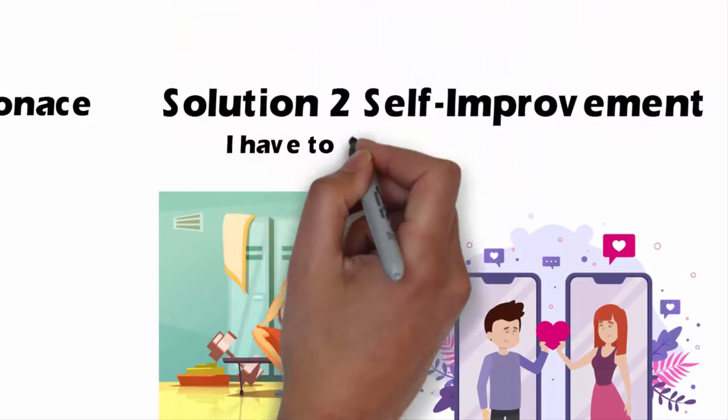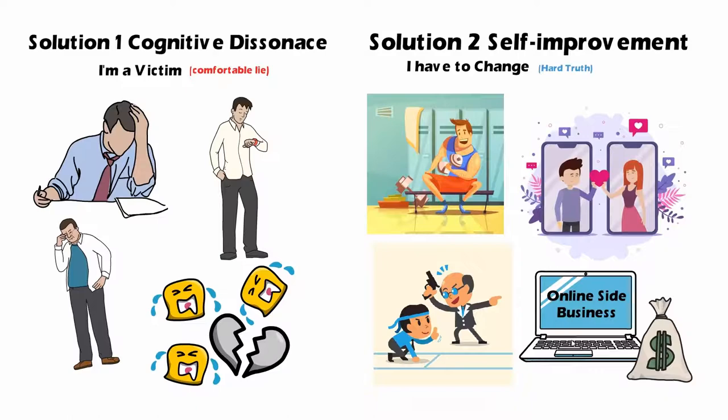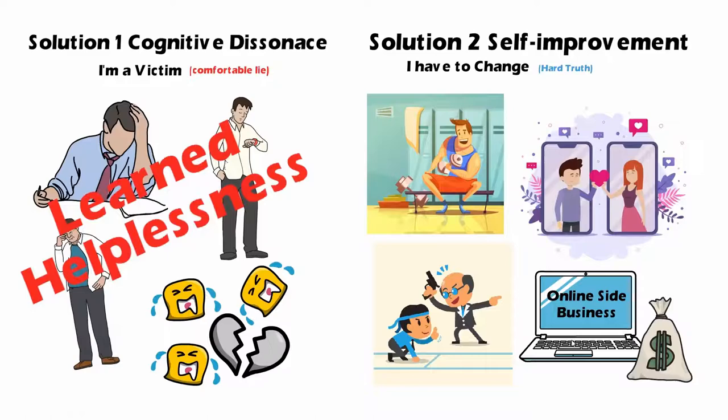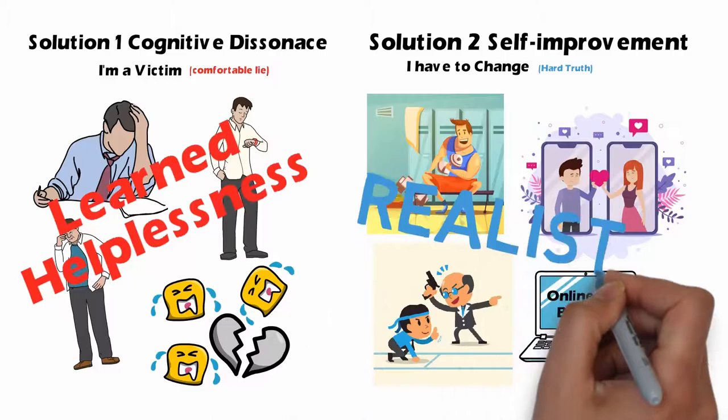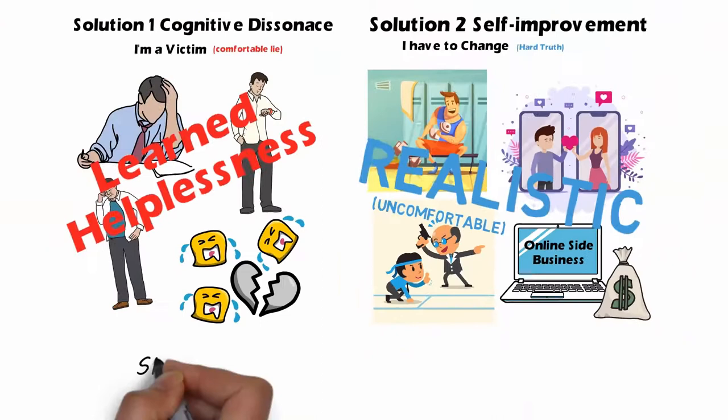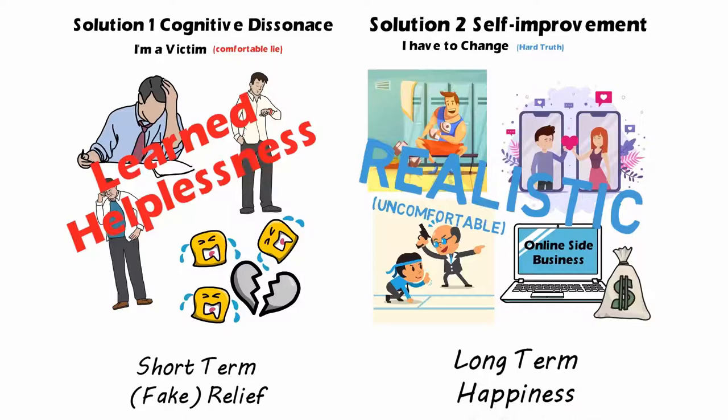So the strategy on the left is what we know as learned helplessness. Learned because Mark learned to be helpless. It's not that you're born helpless. And solution two is known as the realistic approach. But unfortunately, it's an uncomfortable one. In other words, the left side is a short term fake relief and the right side is long term happiness. So looking at these two approaches, which one would you choose?